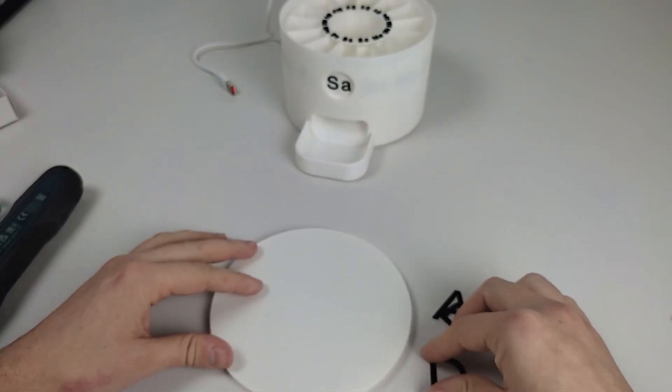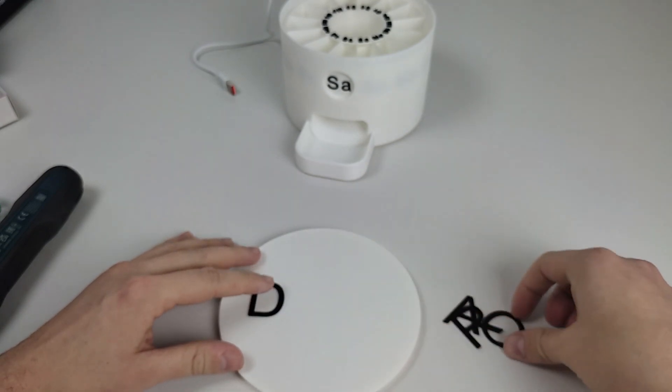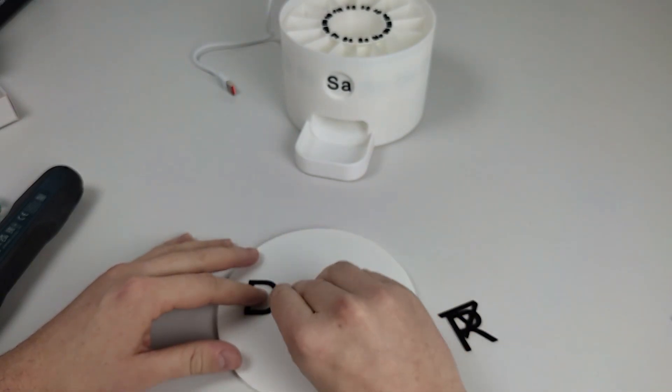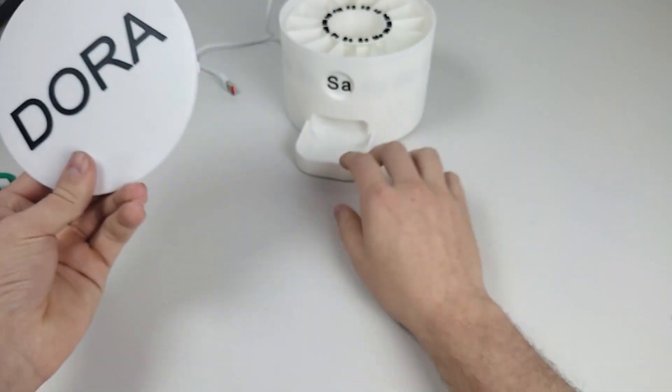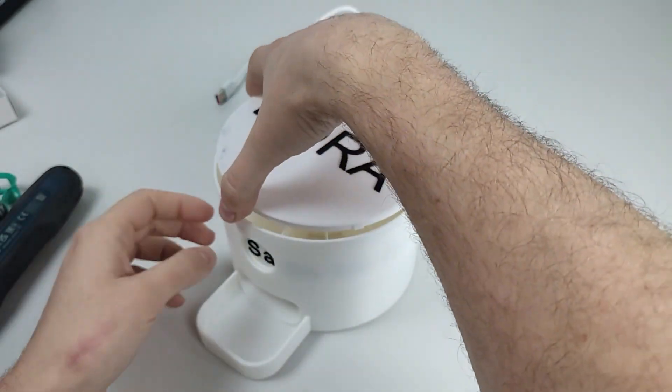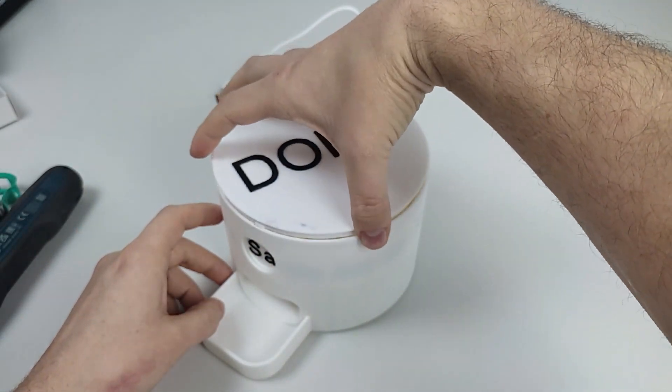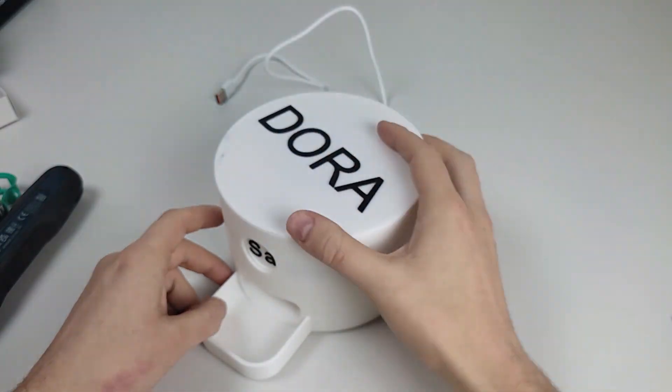You can now label or decorate the lid as you like. Letters and numbers are included in the files. Note the lid has a child lock. If it doesn't open right away, don't panic. But how it works, you'll have to figure that out yourself.